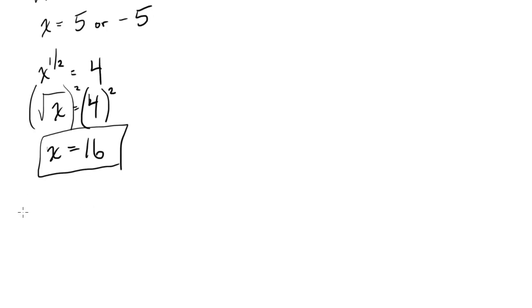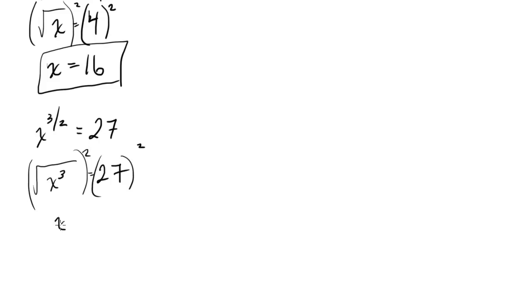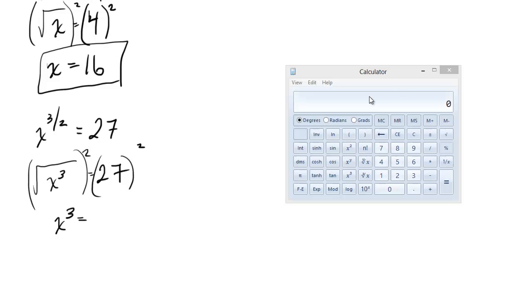How about something a bit more complex? What about, let's see, x to the 3 halves equals 27. Well now things are getting a bit crazy. Well break it up. So this is the same thing as x cubed square rooted. So we could look at it for instance as the square root of x cubed. Let's go ahead and square both sides just to get rid of the square root. I do that, I'm left with x cubed equals, let me get my calculator, 27 squared is 729.